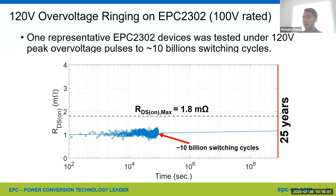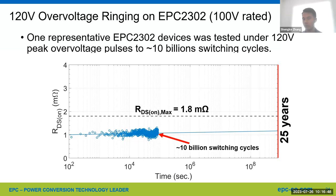Now let's test our latest QFM device, EPC-2302 — also 100-volt rated. We showed one representative EPC-2302 device subjected to a whopping 10 billion cycles of 120-volt over-voltage spikes, where very small RDS(on) shift was measured. The additional 8.5 billion switching cycles still follow the linear projected line, providing further validation to our hot carrier trapping lifetime model. It also shows very small RDS(on) shift over 25 years of continuous operation under repetitive over-voltage switching, demonstrating the extreme robustness of our 100-volt GaN FETs.